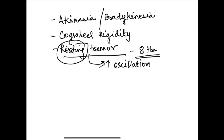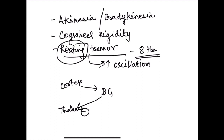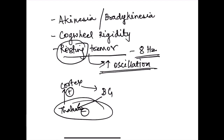The basal ganglia circuit operates as a negative feedback loop: from cortex to basal ganglia, the basal ganglia has inhibitory input to the thalamus, and the thalamus has excitatory input back to the cortex. When dopamine is lost, increased oscillations occur in this circuit, and that leads to the resting tremors.